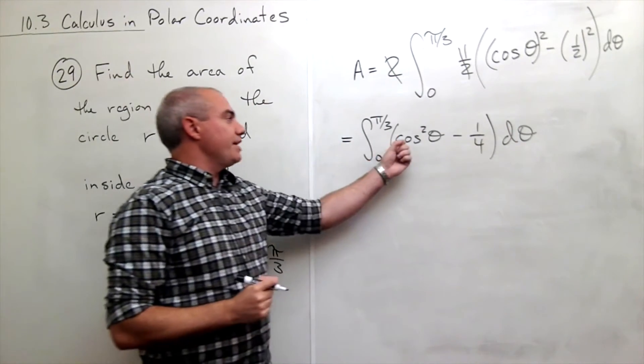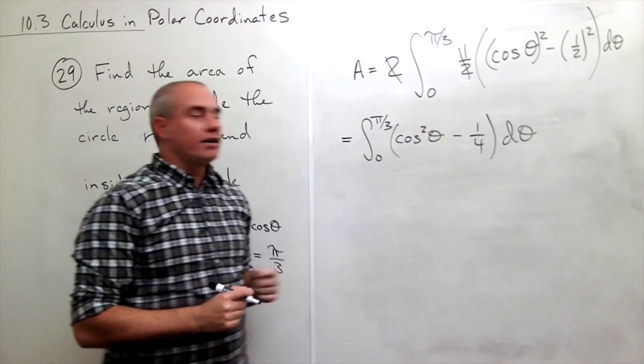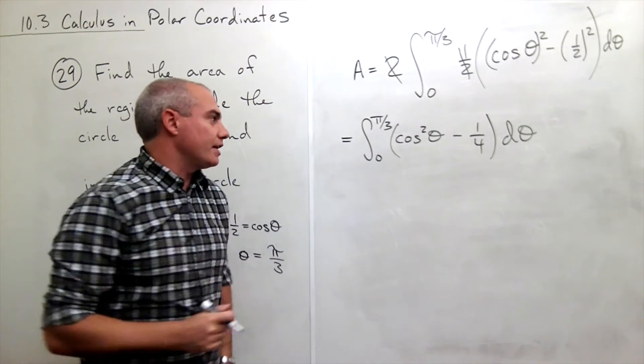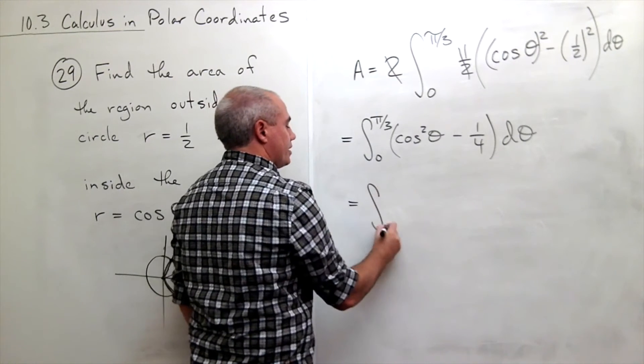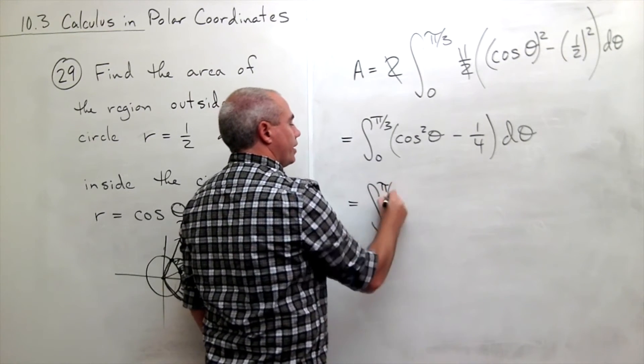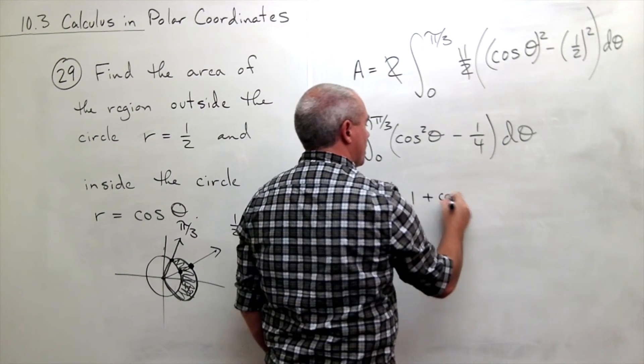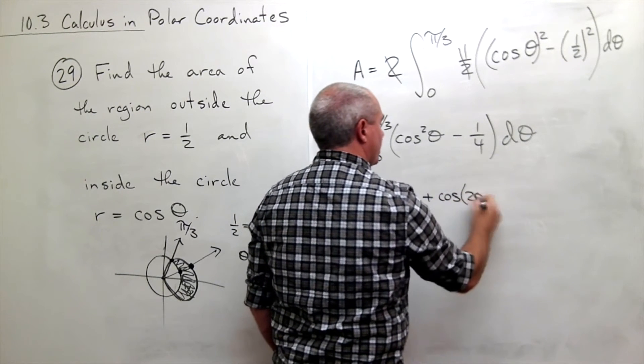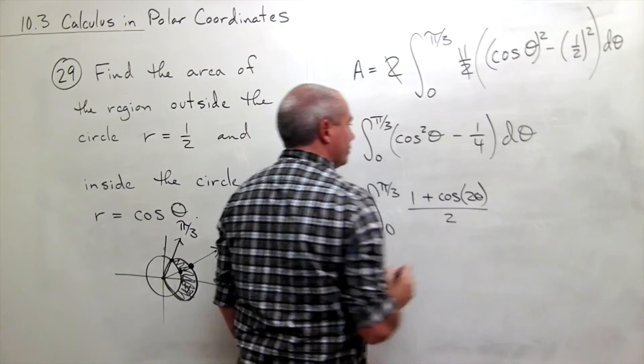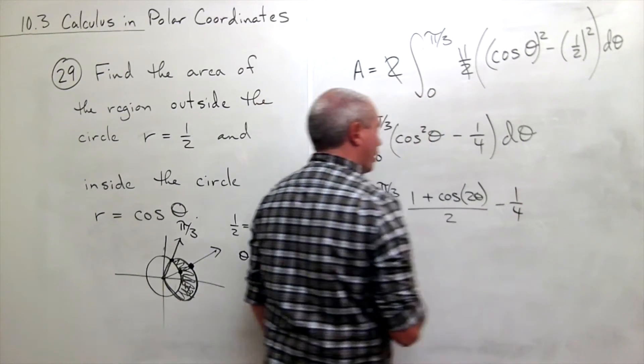Alright. Let's replace the cosine squared of theta with its half-angle identity. And we will rewrite this as the integral from zero to pi over three of one plus cosine of two theta over two minus one-fourth.